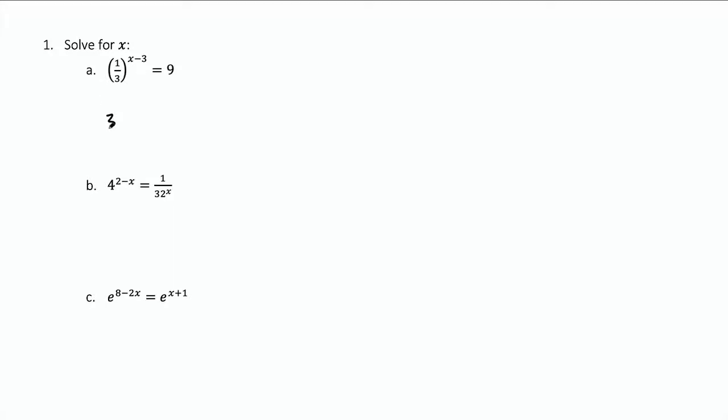One-third is three to the negative one. So on the left side I can use the exponent property which says that if I have an exponent and then raised to another exponent I can multiply those two exponents. So this becomes three to the negative x plus three, multiplying that negative one by the x minus three, and that's equal to three squared.